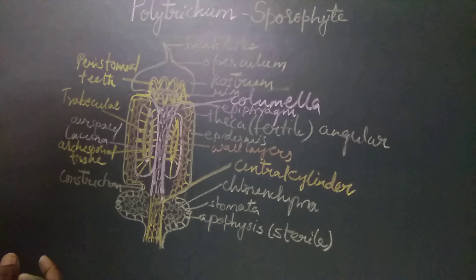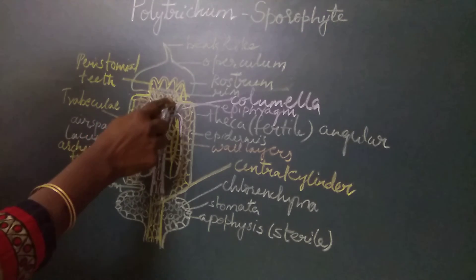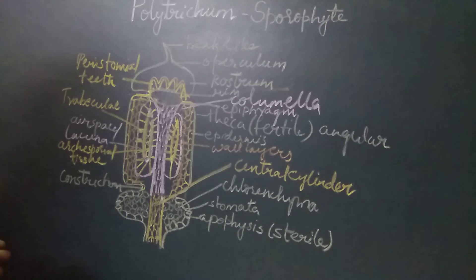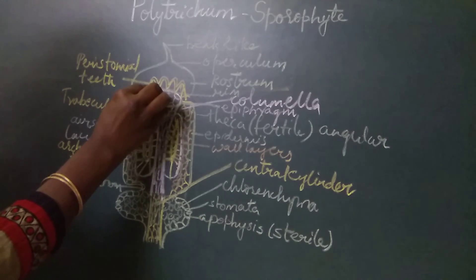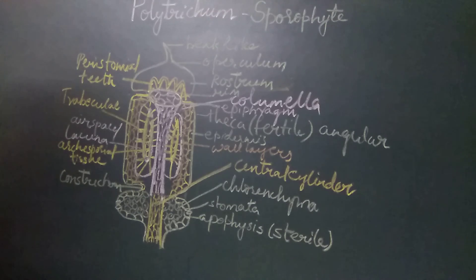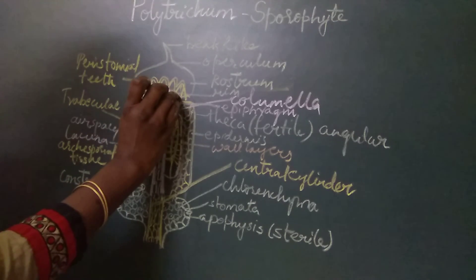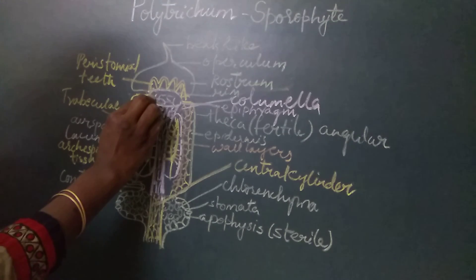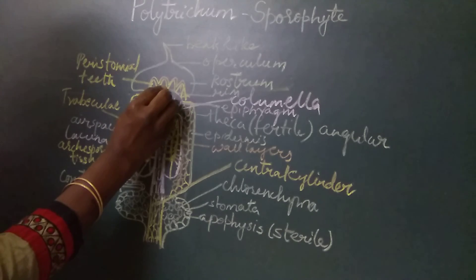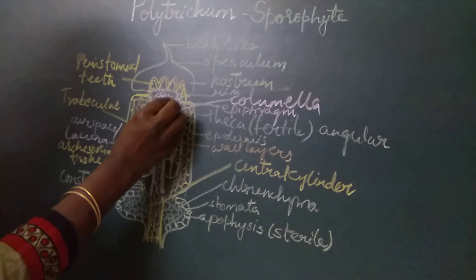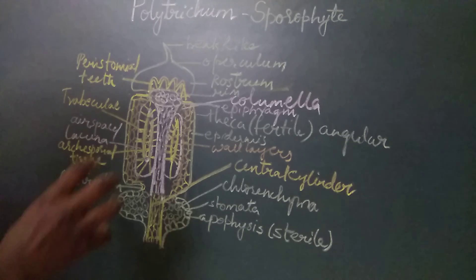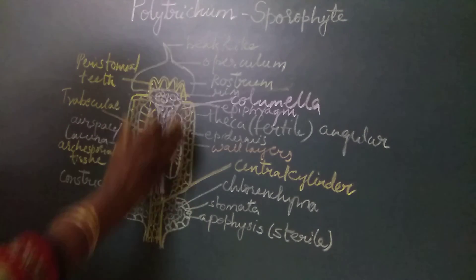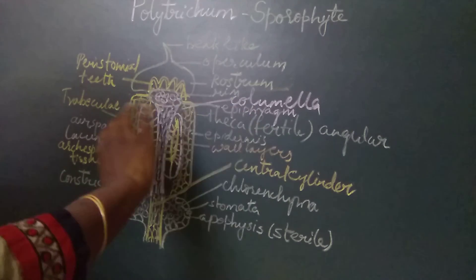When the epiphragm is exposed to the external environment, because of dry conditions the cells in the epiphragm start shrinking. The epiphragm is an expanded structure with thin-walled cells. As all the cells shrink, they lose their attachment from the periphery of the epiphragm, creating small holes in the peripheral region. During this condition, the capsule is not erect on the plant but changes its position and becomes horizontal.